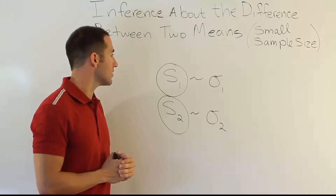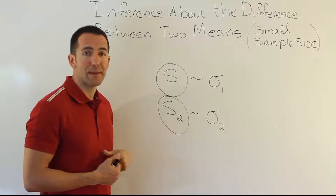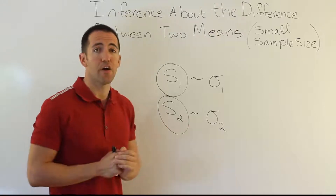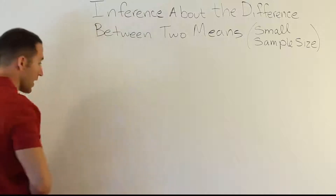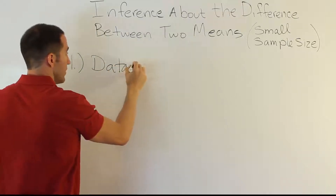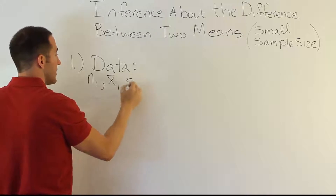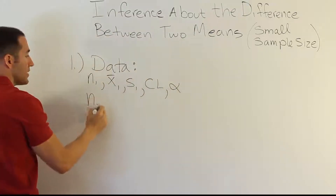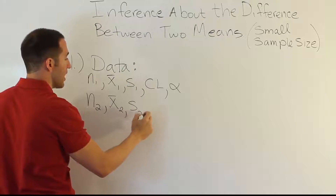An example where you might assume they're the same: say you're looking at the variation between test scores for males and females — it might be that the variation between those two groups is the same. So we can compare their means and assume that their standard deviations are equal. In that case, let's talk about how you do a confidence interval. In Step 1, we collect the data: sample size, sample mean, and standard deviation for each group, plus a confidence level and the resulting alpha — that's eight items total.